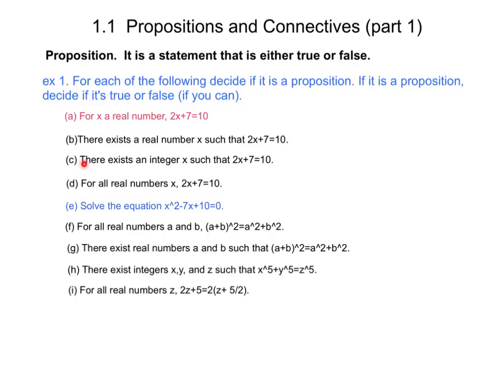C is a proposition but it's a false proposition because there doesn't exist an integer x with 2x plus 7 equals 10 since 3 halves isn't an integer.